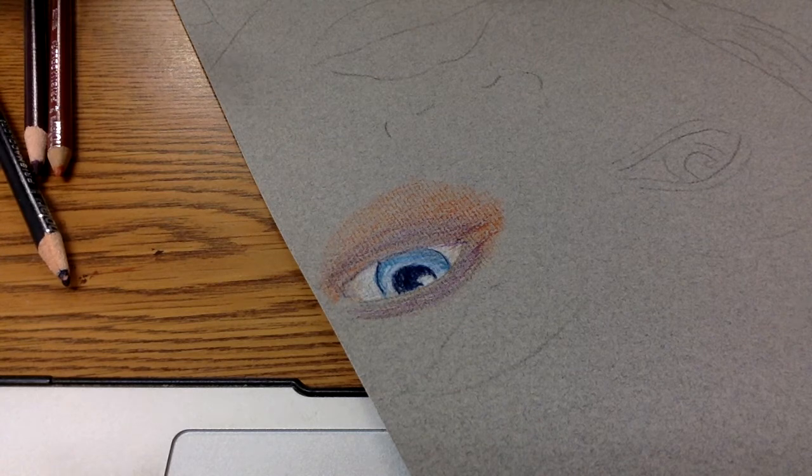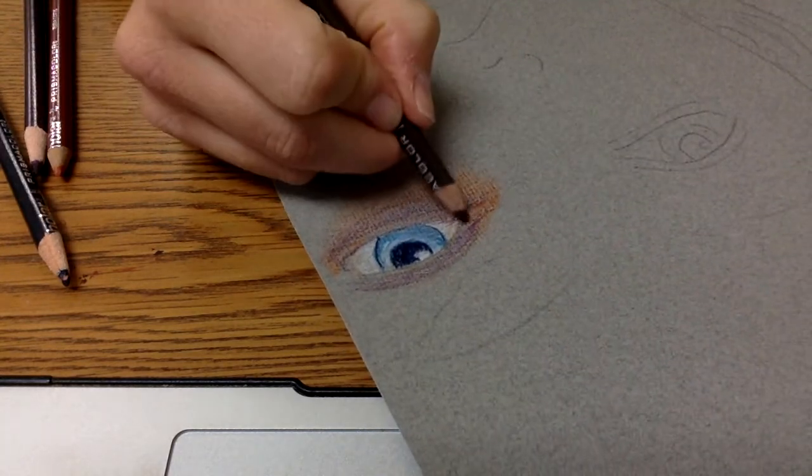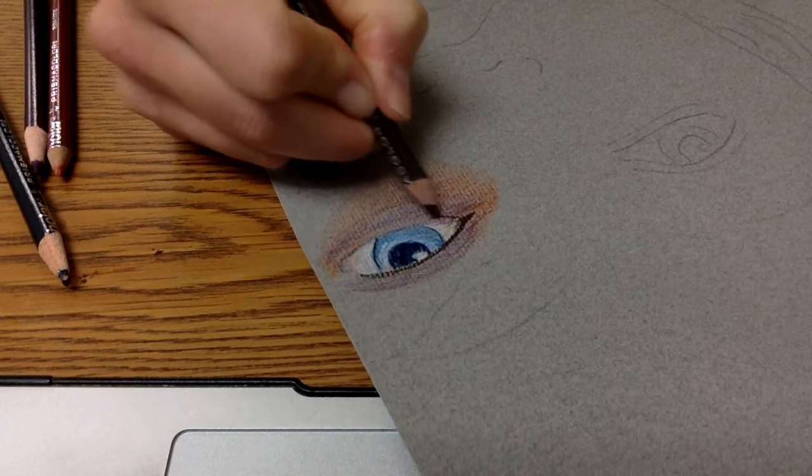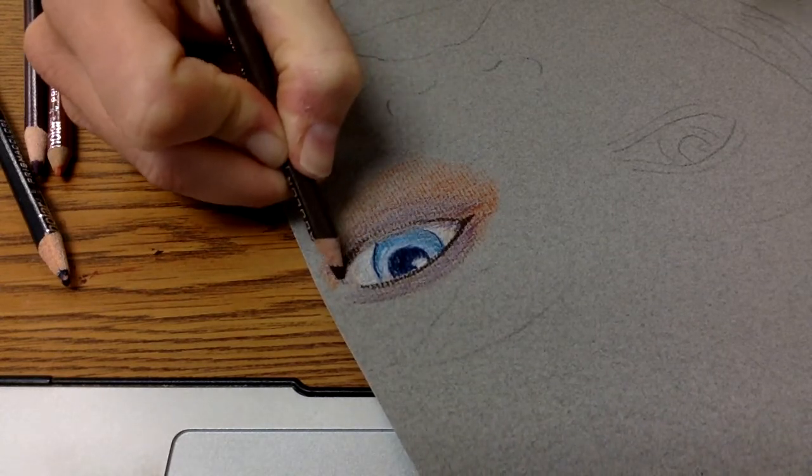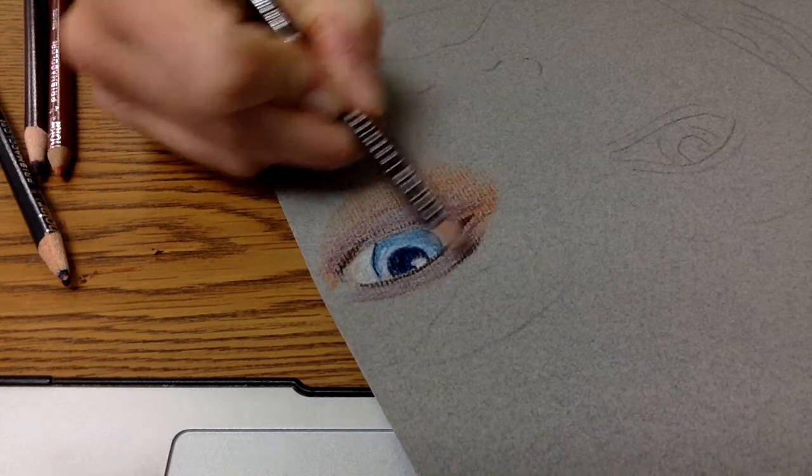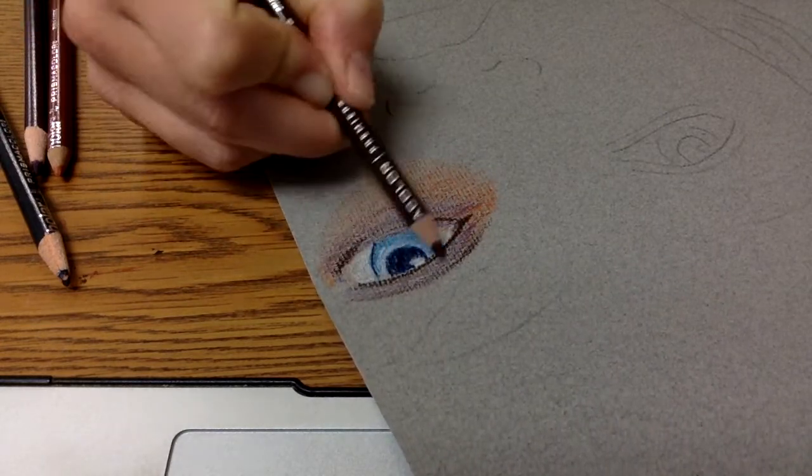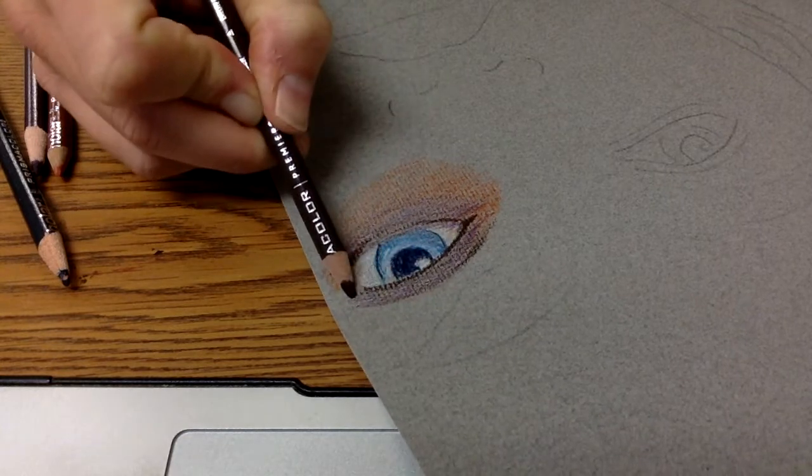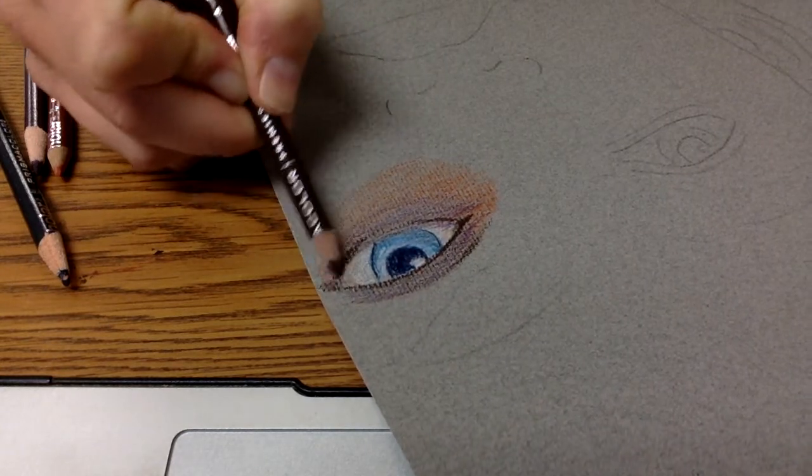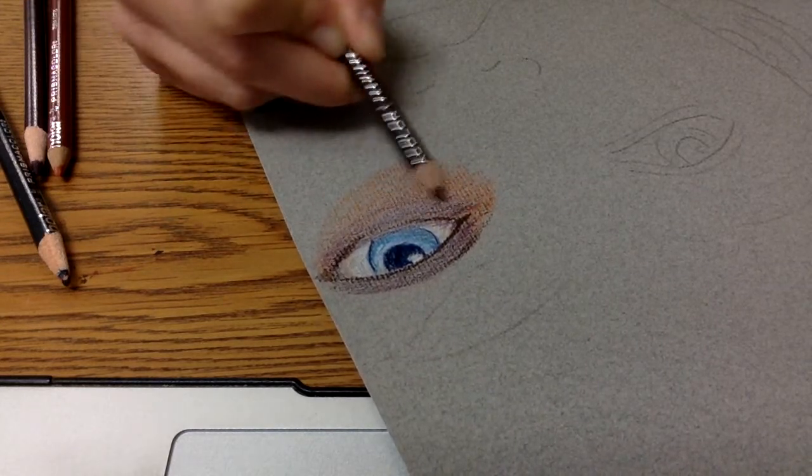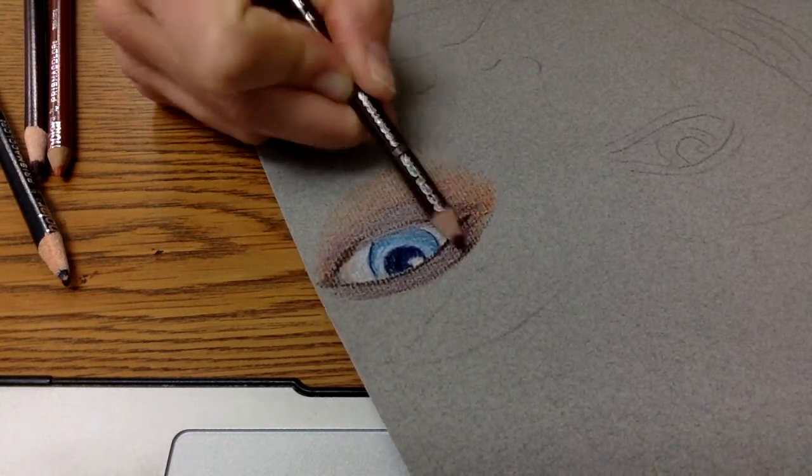Then my last step is going to be to come in again with those shadows and highlights. So I know above the eye is like dark brown, and below the eye is dark, and up above the eyelid is dark right there. So now I'm adding in the shadows and layering that in.